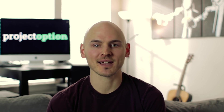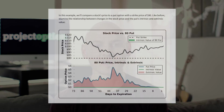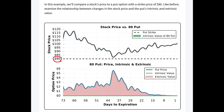Now let's look at a put option example. We're looking at a put option with a strike price of $80 and 73 days until expiration at the beginning of the period. At the start, the stock price was at $110 — significantly above the put strike price of $80. Since put options have intrinsic value when the stock price is below the put strike price, this put option had no intrinsic value at entry, meaning its entire value of $2 was 100% extrinsic.